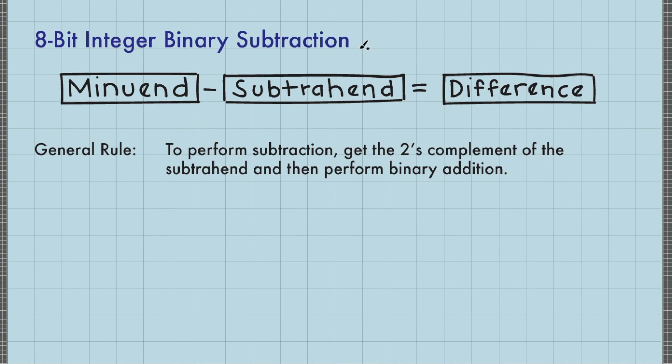The resulting number from this operation is called the difference. As a general rule, to perform subtraction of two 8-bit binary numbers, get the 2's complement of the subtrahend regardless of its initial sign, and then the same rules from binary addition apply.